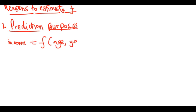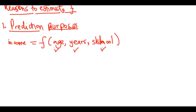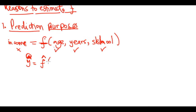We know the person's age from their CV, we know their years of experience, and we know the school they went to — so we have the inputs but we do not have y. In that case we can estimate y using an estimate of f. We will not get the actual income the person deserves because it depends on so many other variables that we don't always record. The hat on y represents an estimate.